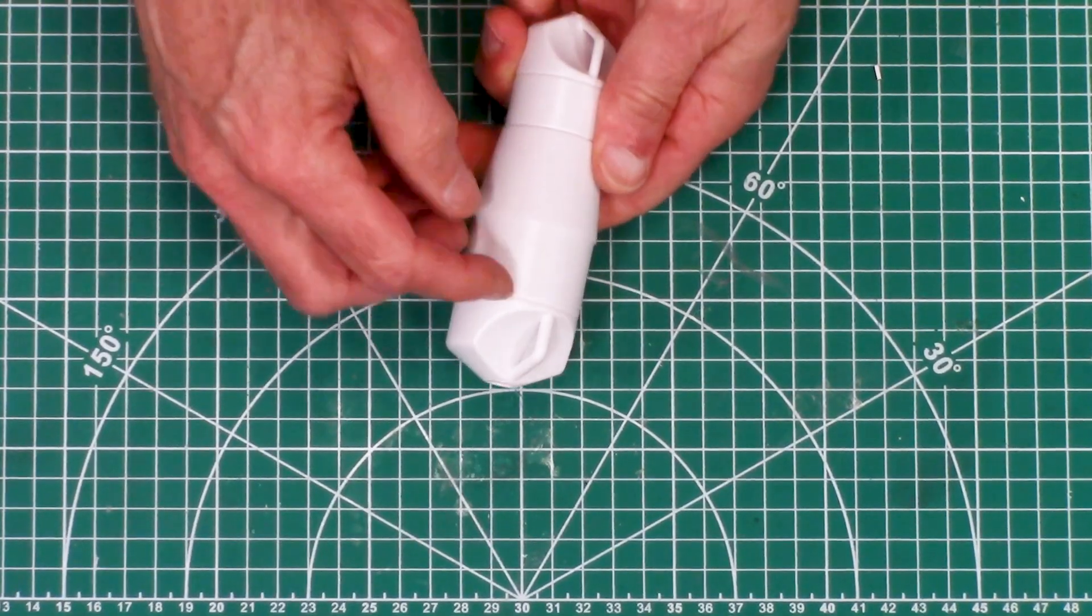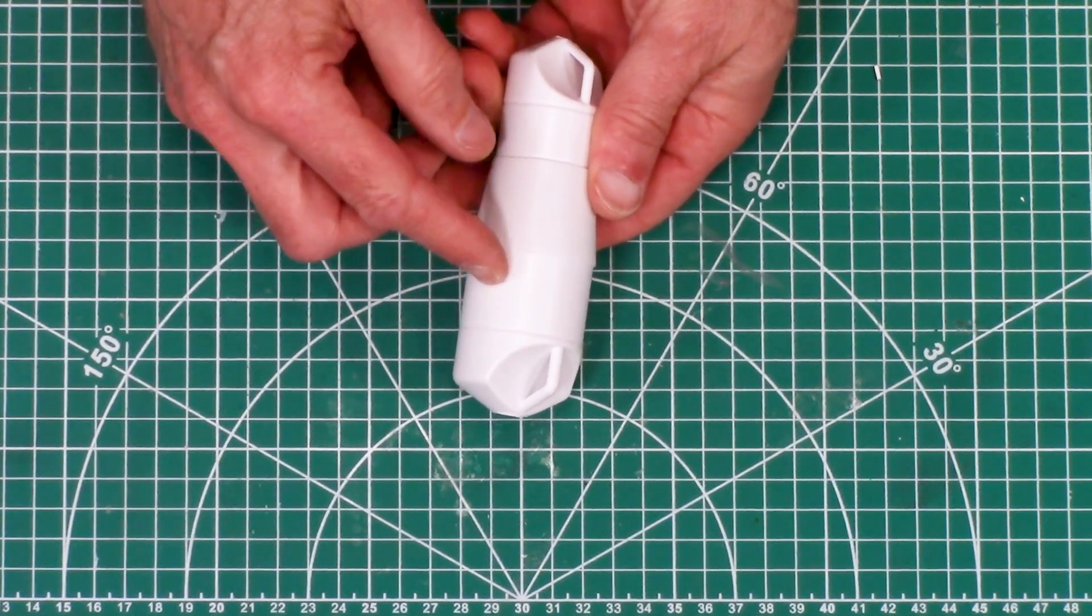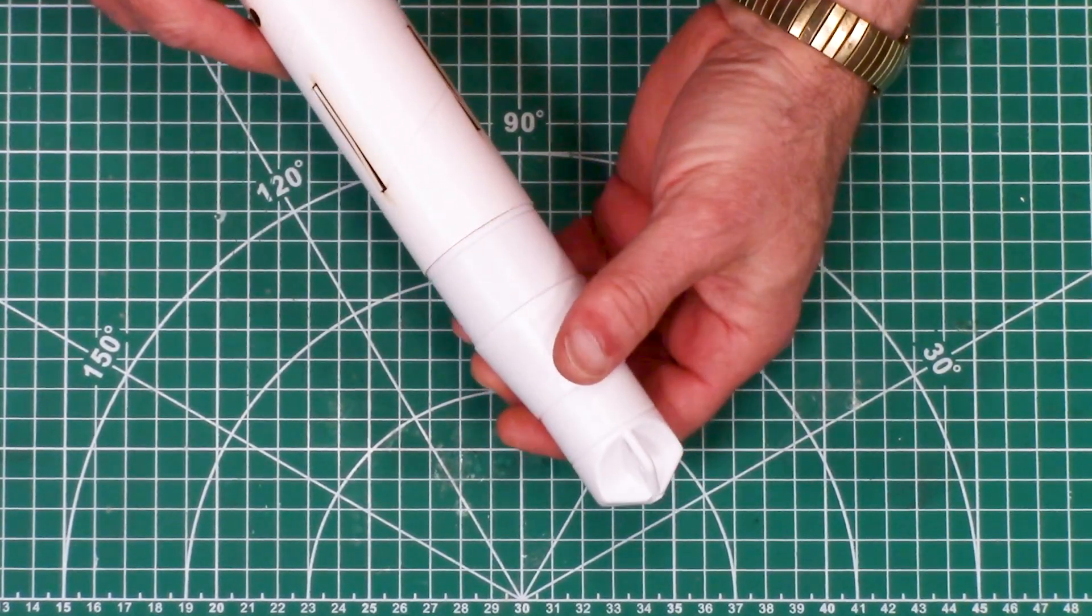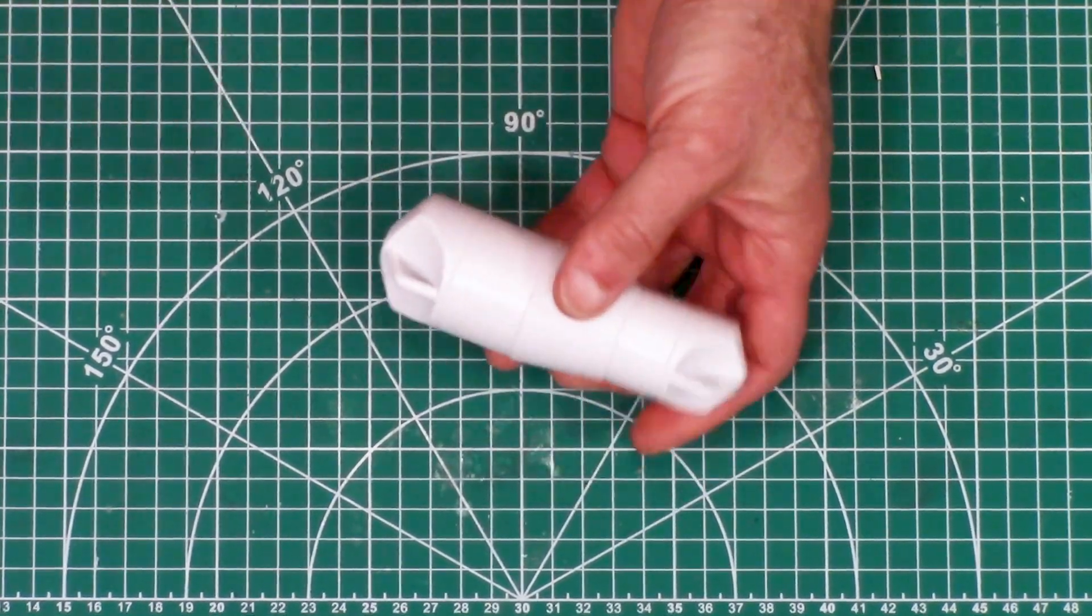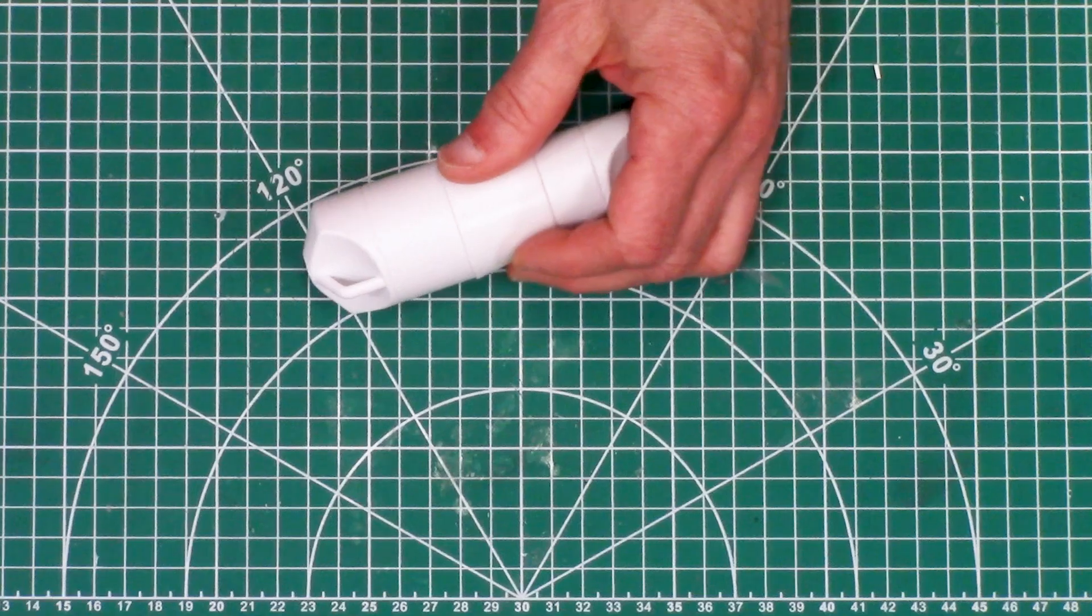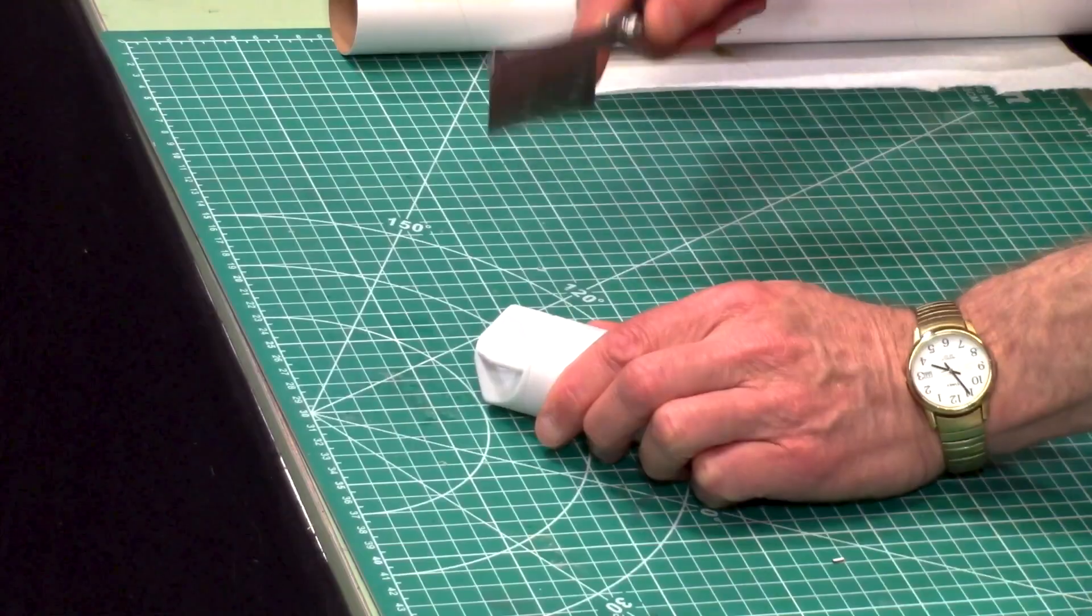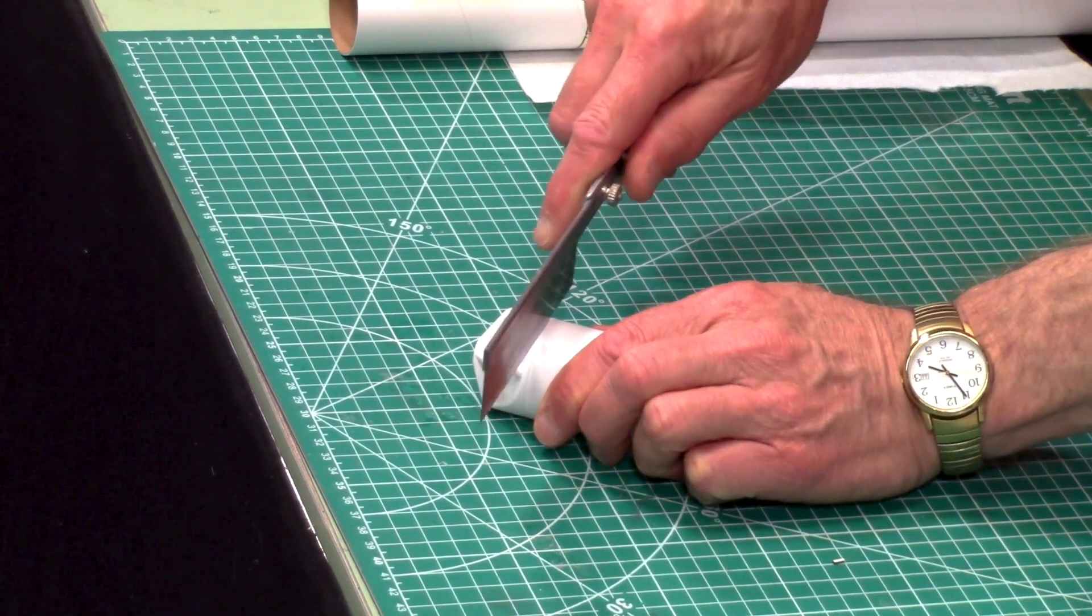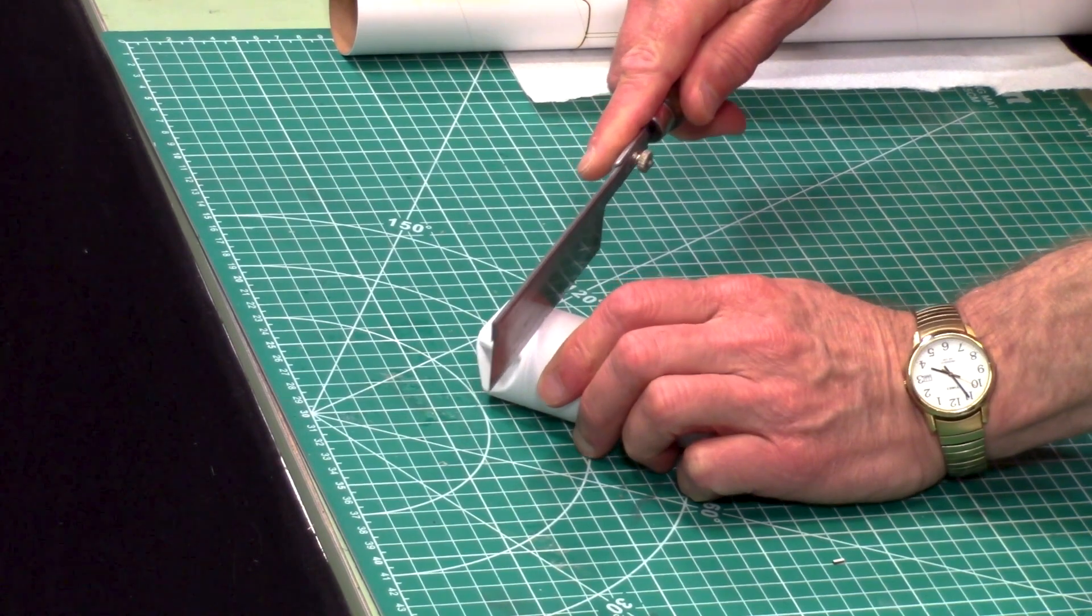On the transition we need to remove this back end because this is going to be the front of the part and it's going to go into the bottom of the tube. So we're going to take a razor saw and cut that off following the groove that's molded into the transition.